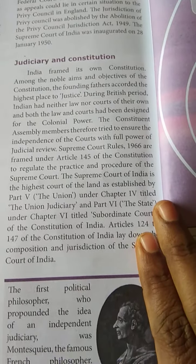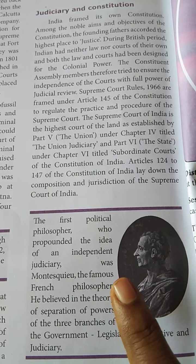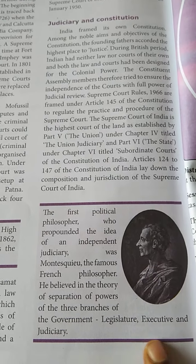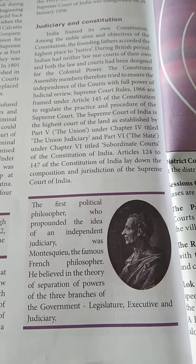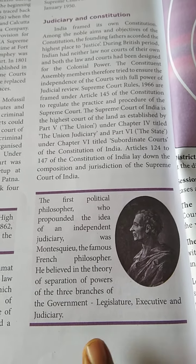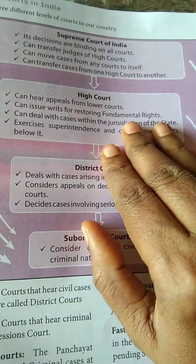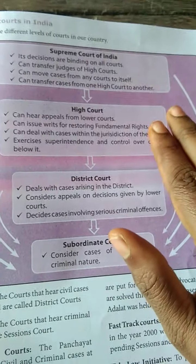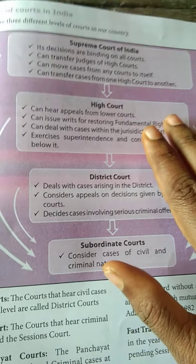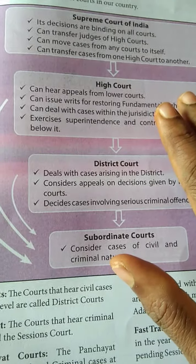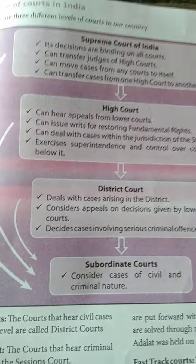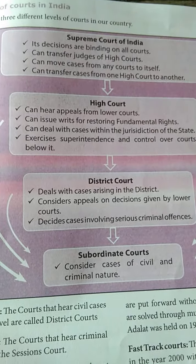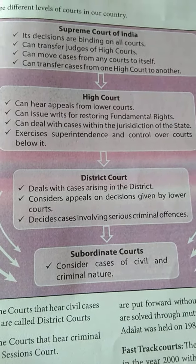The first political philosopher who propounded the idea of an independent judiciary was Montesquieu, the famous French philosopher. He believed in the theory of separation of powers among three branches of government: the legislature, the executive, and the judiciary. Regarding the structure of the courts: the Supreme Court of India's decisions are binding on all courts. It can transfer judges of the High Courts, transfer cases from any court to itself, and transfer cases from one High Court to another.